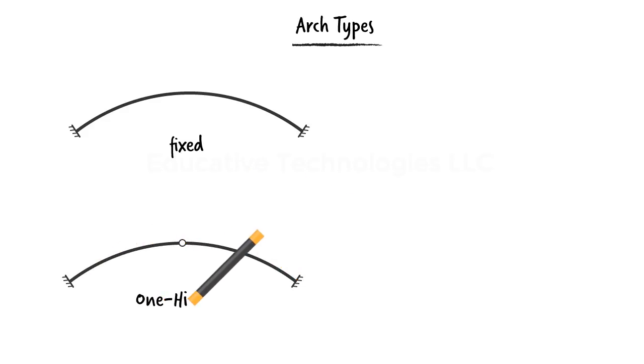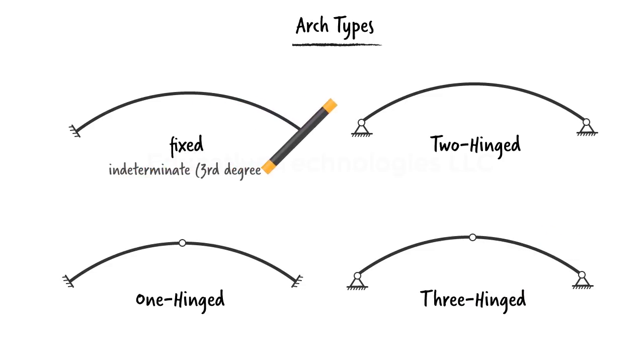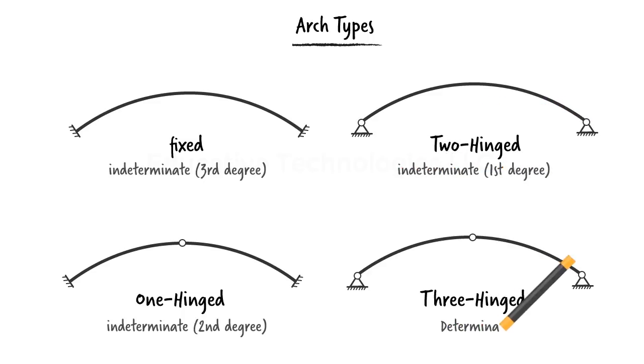We can classify arches based on their boundary conditions. An arch could be fixed at both ends with no hinges present. We can have an arch with a hinge at its crown, and there are two-hinged and three-hinged arches. The degree of indeterminacy of these arch types varies from 3 to 0. The three-hinged arch is considered a statically determinate system.